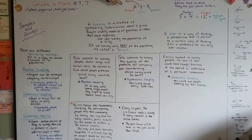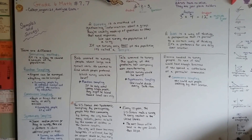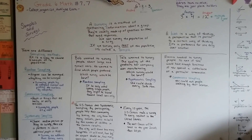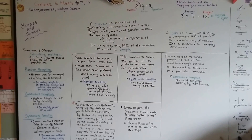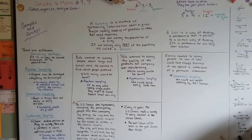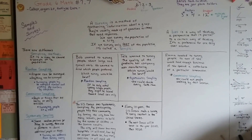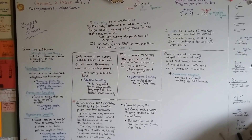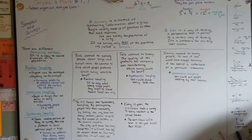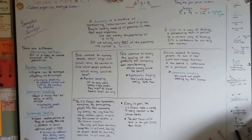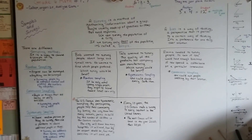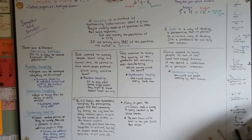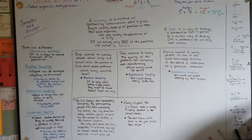So that's surveys, samples, and bias — I hope you understand them now and will be able to do your work in your Go Math book. I'm going to talk about investigative surveying next. I'll see you there.